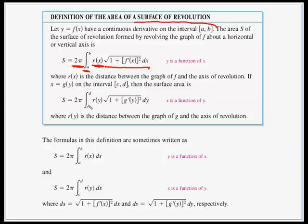If we're working with respect to the y-axis, it's 2π times the integral from c to d of r(y) times the radical of 1 plus g′(y) quantity squared.